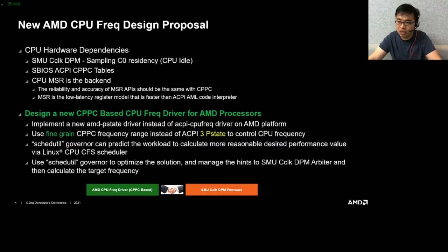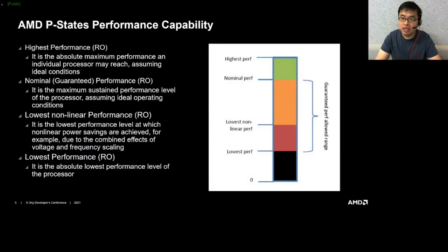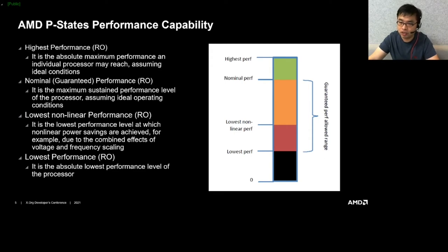We can leverage kernel governors such as schedutil to predict the workload and calculate more reasonable desired performance goals together with the Linux CPU CFS scheduler. We mainly use the schedutil governor to optimize the solution and manage the hints to the SMU clock DPM to calculate the final target frequency. These four performance values are defined for AMD P-state performance capabilities — they are performance scales mapped to different processor frequencies, since different processor types have different frequencies.